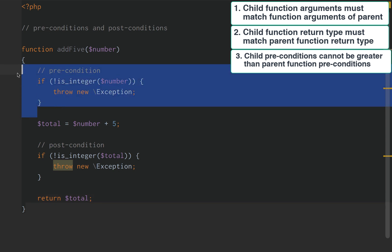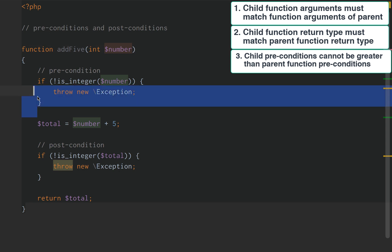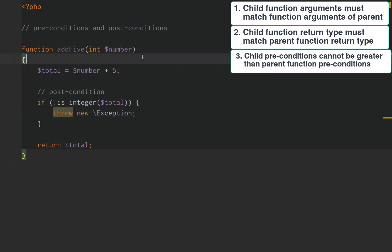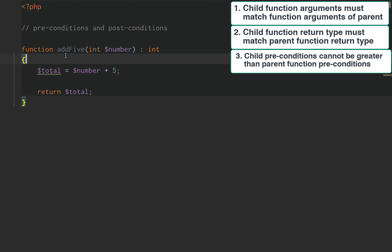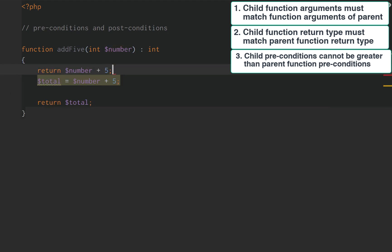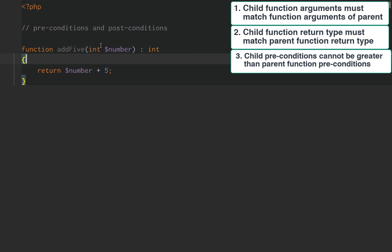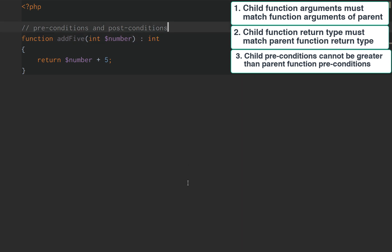Another form of preconditions and postconditions would be replacing the precondition check with a typed int parameter — if it's not an integer, it will throw an error automatically. Then we can replace the postcondition by enforcing the return type as int, confirming the total is an int. We can then just return number plus 5. We've successfully refactored our precondition as the typing on our parameter, and our postcondition as the typing on our return value. That's preconditions and postconditions in a nutshell.